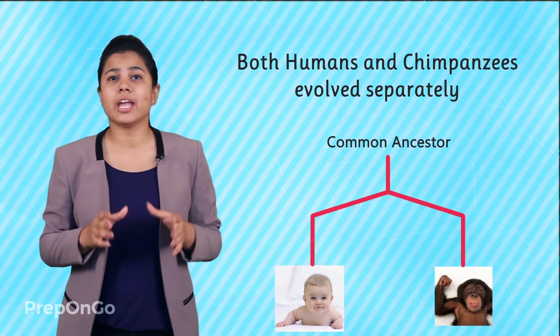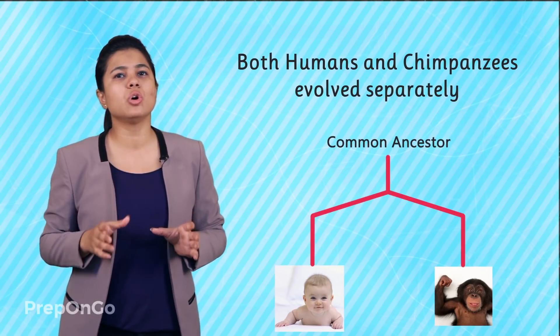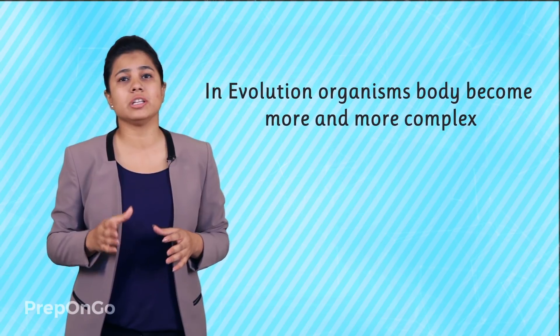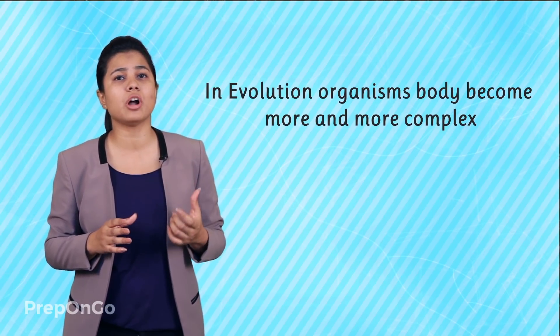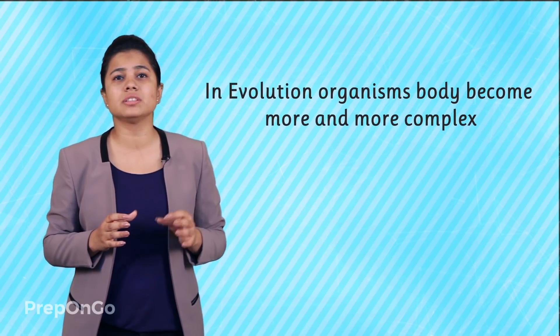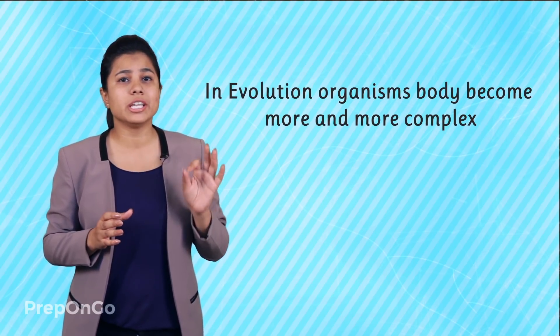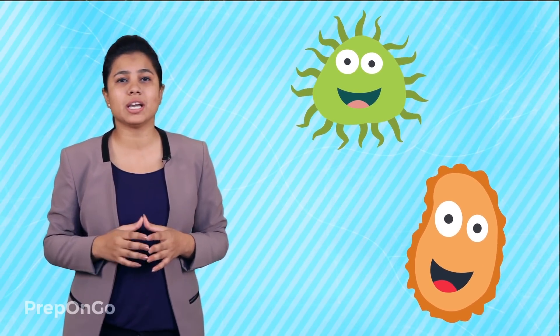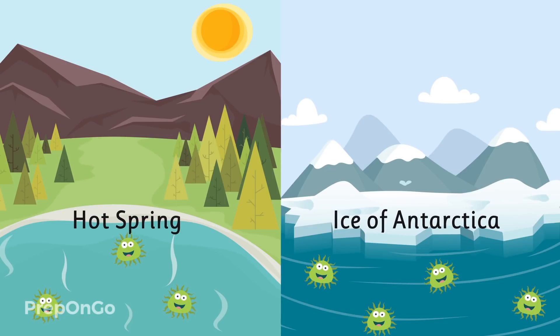You see that progress has no role in evolution. The only progress in evolution is that the organism's body becomes more and more complex, but that doesn't also mean that the old body was ineffective or inefficient. For example, the primitive and simplest life form called bacteria still survives in very harsh conditions like hot springs and the ice of Antarctica.